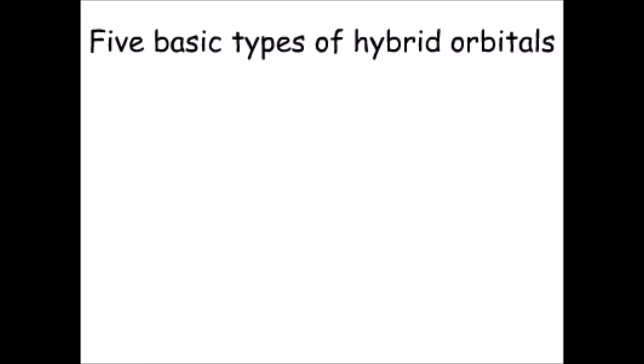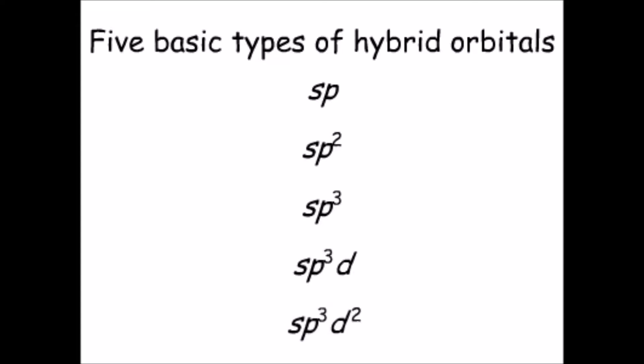There are five basic types of hybrid orbitals: SP, SP2, SP3, SP3D, and SP3D2. Let's look at these orbitals one at a time.